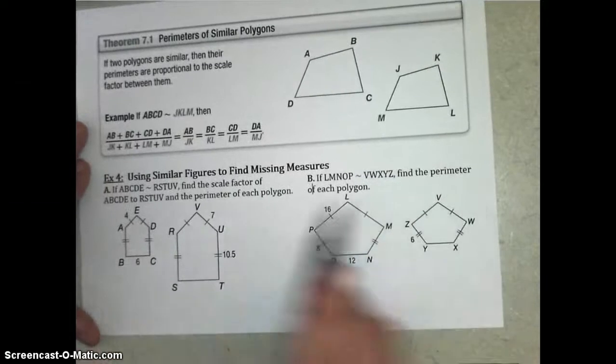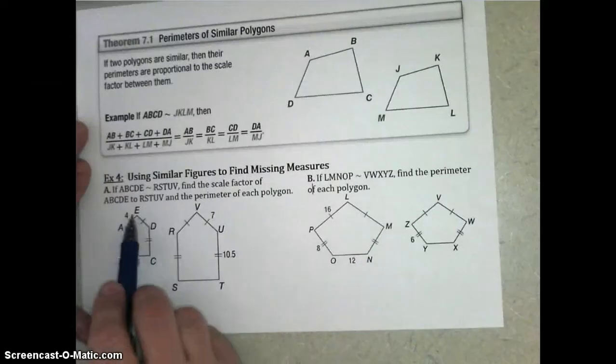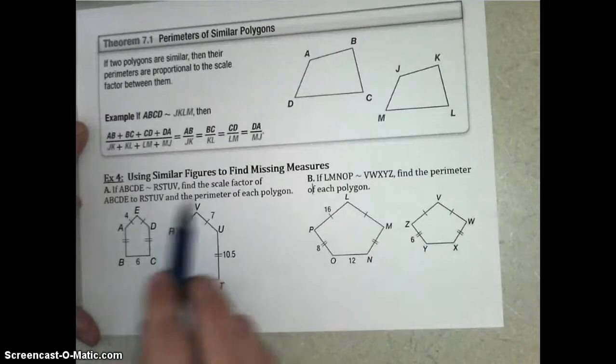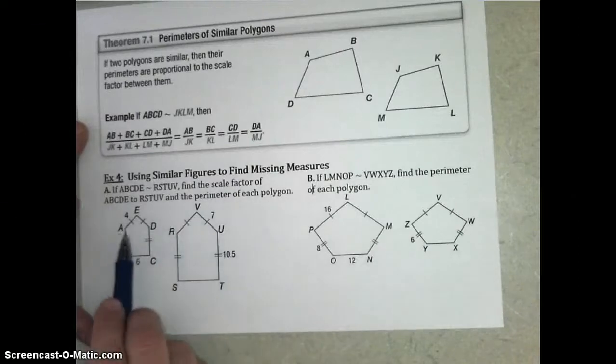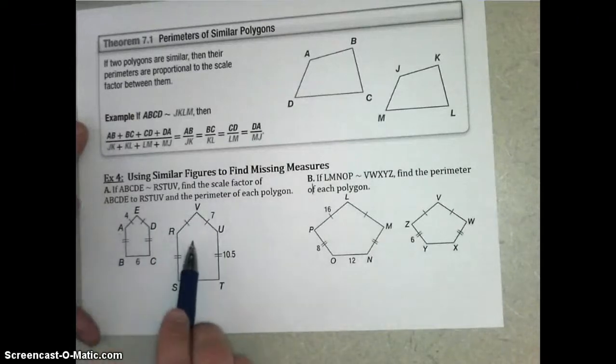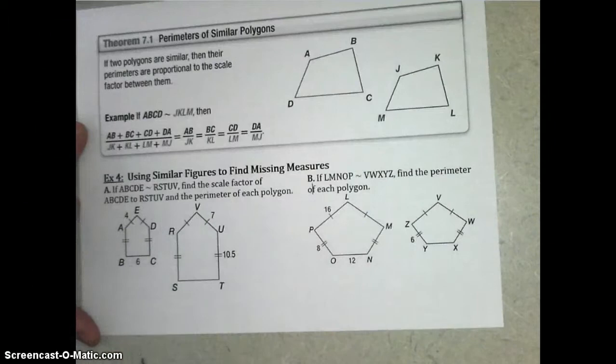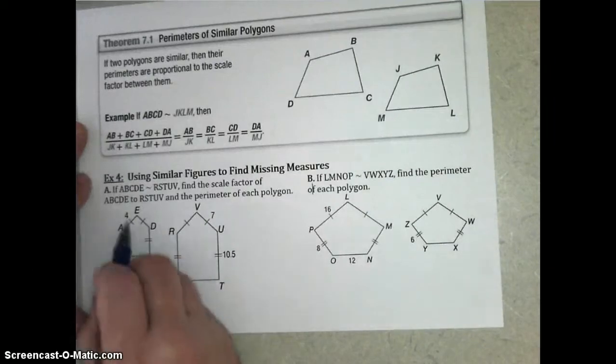So, let's try example 4A. If ABCDE is similar to RSTUV, find the scale factor of ABCDE to RSTUV, and the perimeter of each polygon. Well, there's some markings here that help us figure these out.